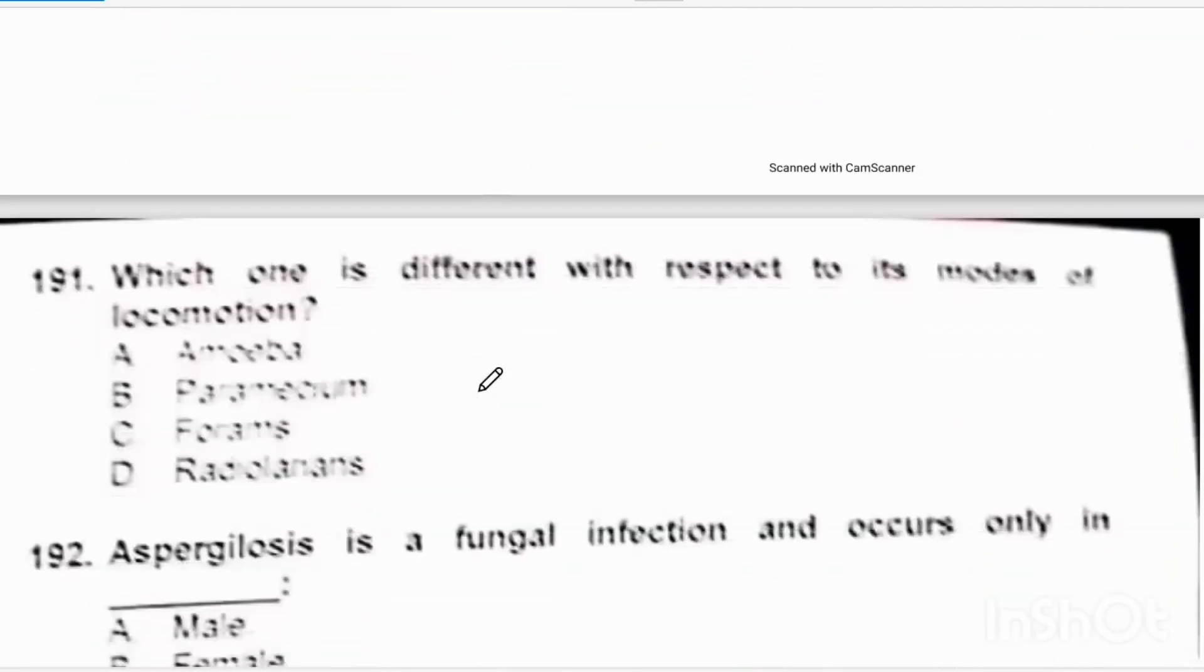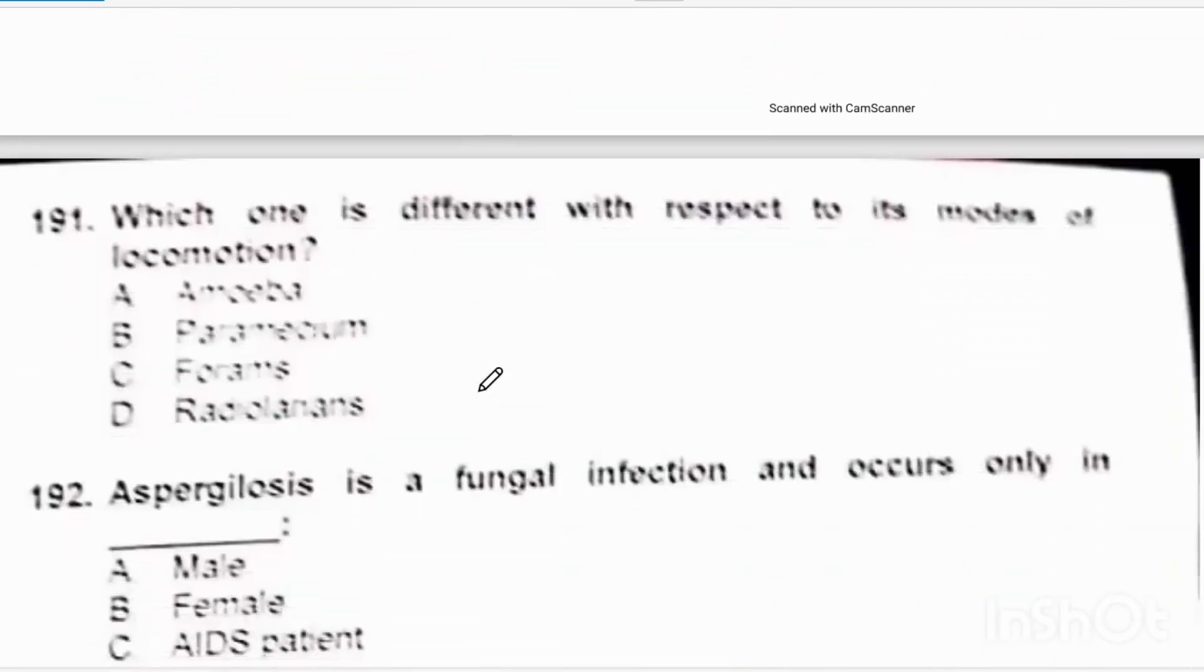Which one is different with respect to the modes of locomotion? Amoeba, forams, and radiolarians have the mode of locomotion as pseudopodia. But paramecium moves with the help of cilia. So correct option will be beta, paramecium moves with the help of cilia.